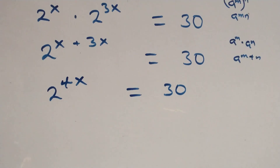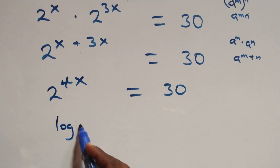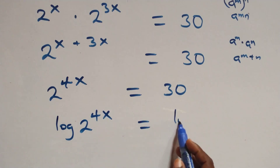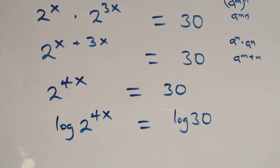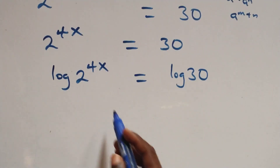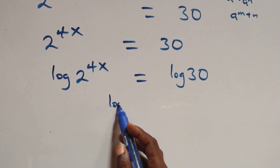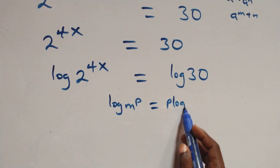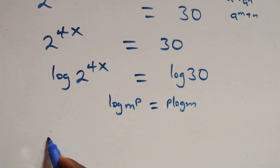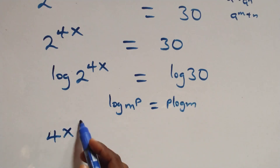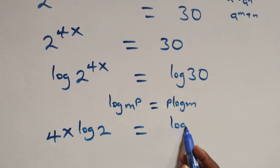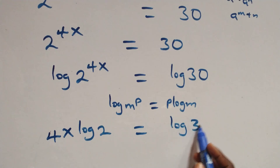Then next step here, we take the log on both sides. That is, we have log of 2 raised to power 4x equals to log 30 on this side. Here we apply the power rule of logarithms: when we have log m raised to power p, this is the same thing as p log m. So we have 4x log 2 equals to log 30.